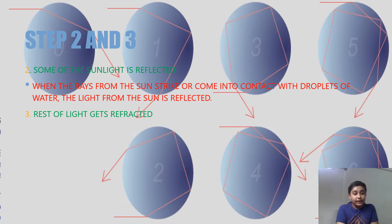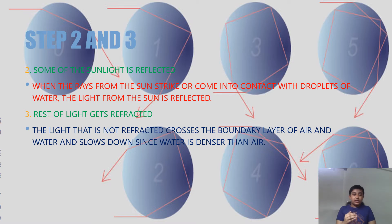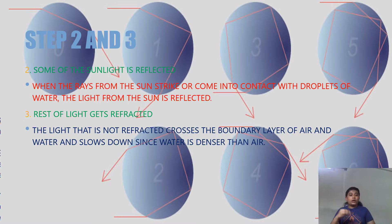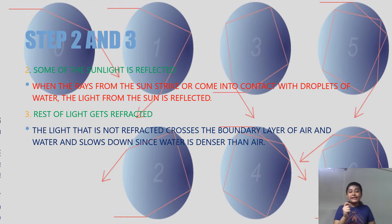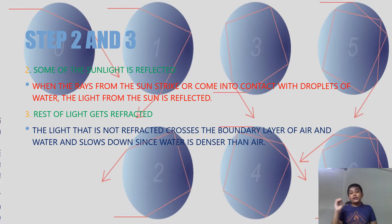The third step is that the rest of the light gets refracted. As you can see in the image, it gets refracted and forms angles — it completes several steps. The light crosses the boundary of the droplet at an angle, then goes through more angles. It slows down because water is denser than air, so that process happens slowly inside the droplet. For us it appears instant because it happens in milliseconds, but for the light it takes a little time to get through those angles.